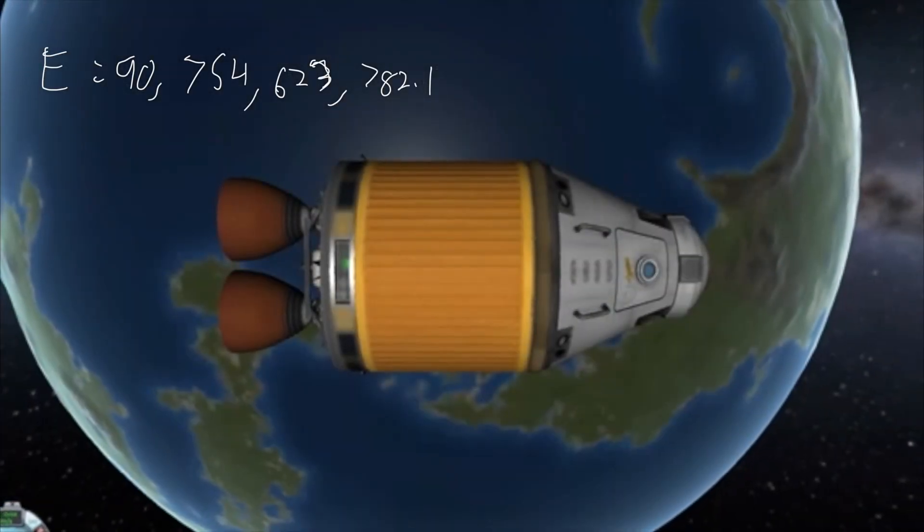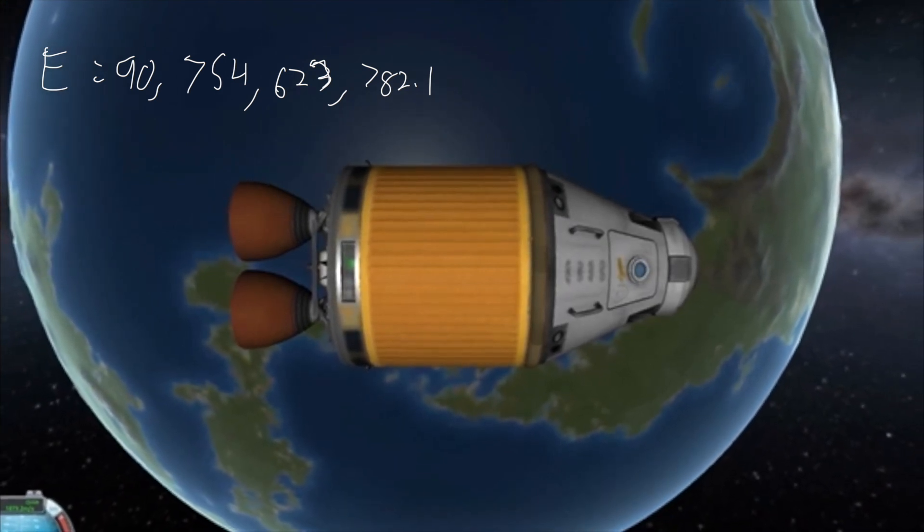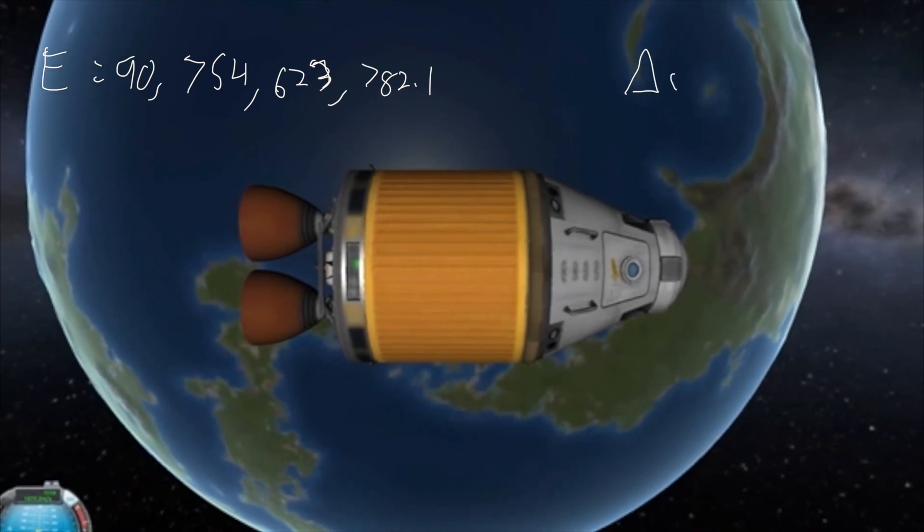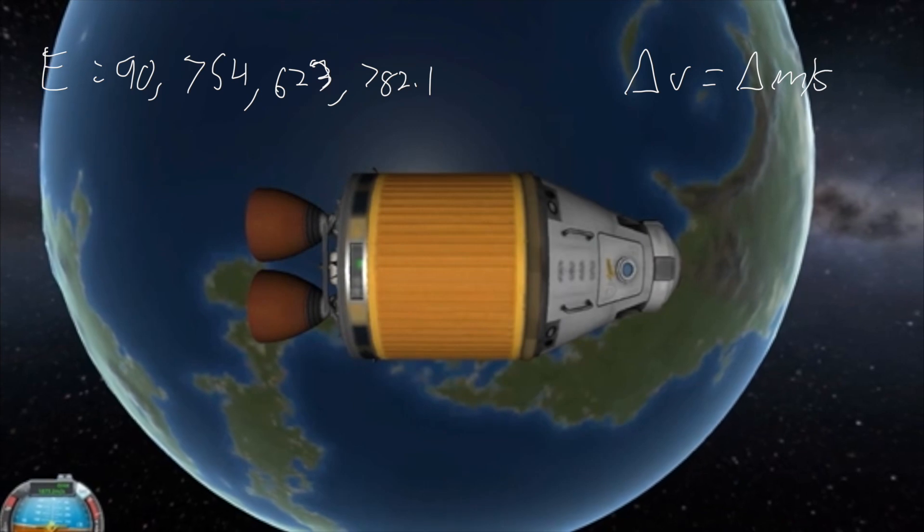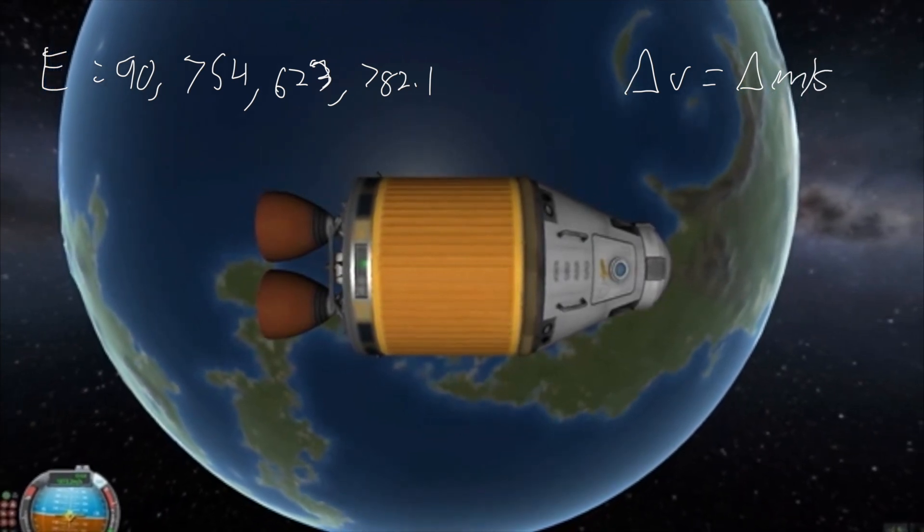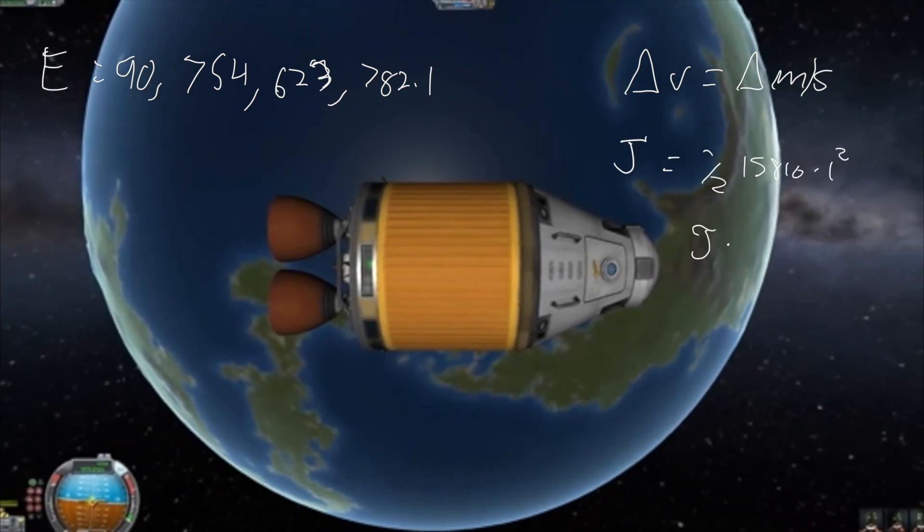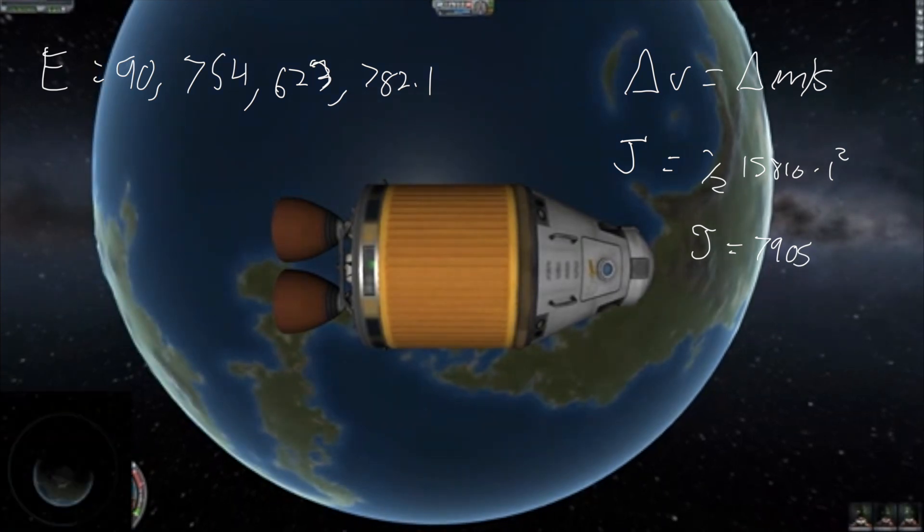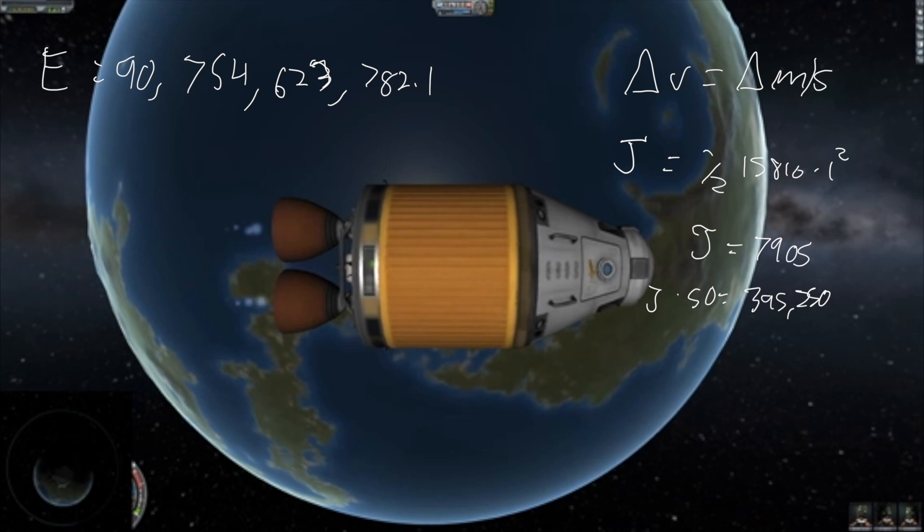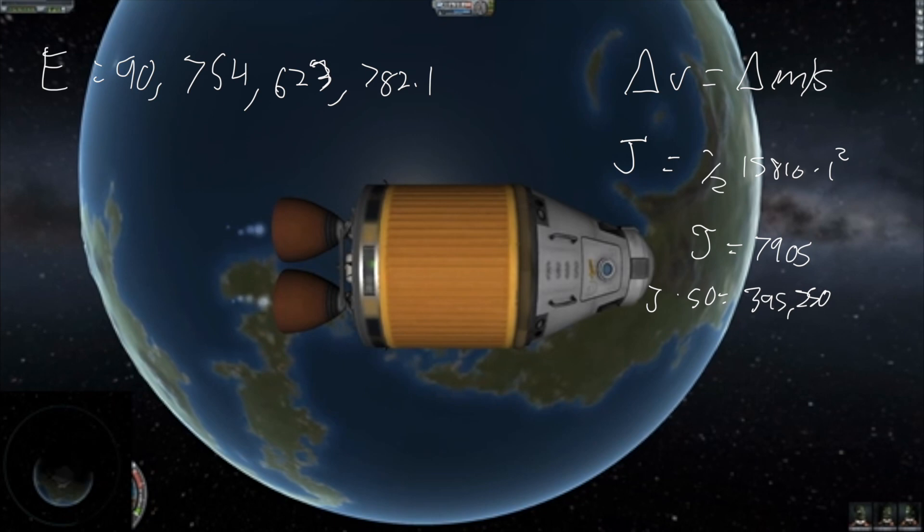Now to demonstrate a change in orbit and how energy is conserved, I'll make an engine burn, and we can see the energy change. In space, fuel is measured in delta v. This is defined as the change in speed. We can calculate that for our craft, how many joules each delta v equals. We can plug in our mass and one delta v and get 7,905 joules. So we can see that if I made a 50 delta v burn, I would gain 395,250 joules, since that's just 7,905 times 50.